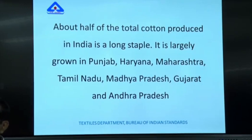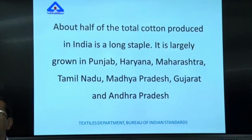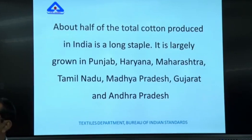Long staple cotton ranges from 24 to 27 millimeters and is produced in Punjab, Haryana, Maharashtra, and Tamil Nadu. About 50 percent of India's production is of long staple cotton. Longer fiber is better because you can spin finer yarns with long staple cotton.